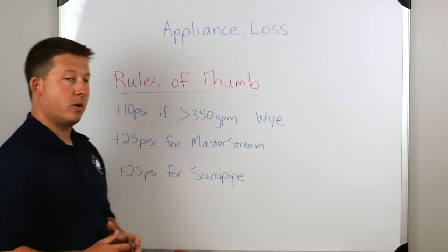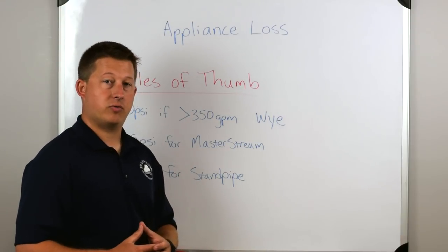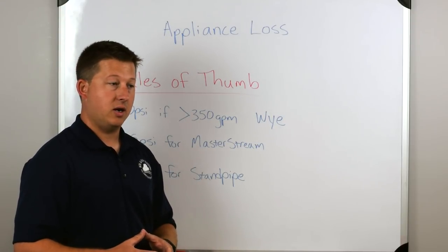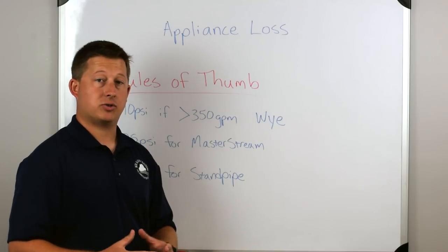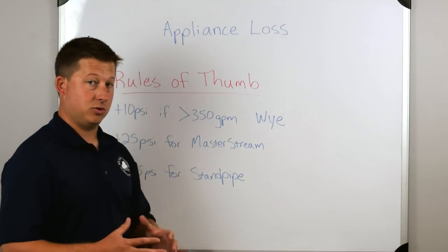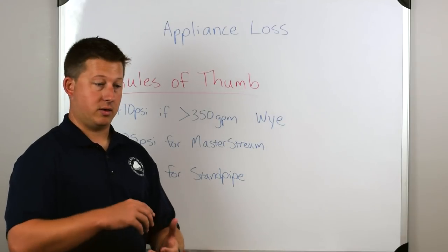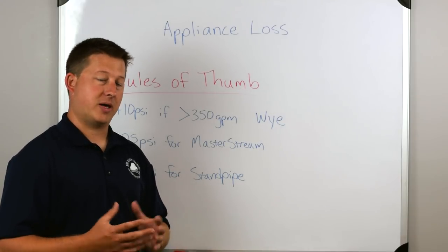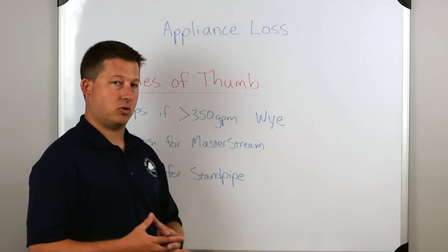Next part is the master streams. Remember that the master streams are also for aerial devices. It could be a master stream up on top of a ladder truck. So that is in addition to the pipe waterway, the water moving through the master stream. That's where that number comes from. It's the additional loss that we have.